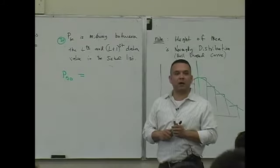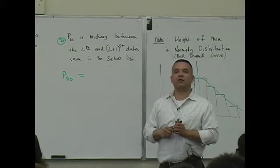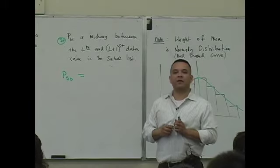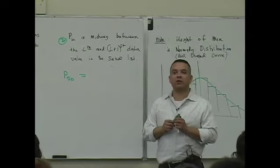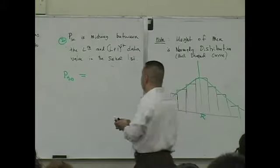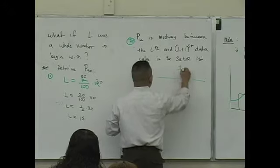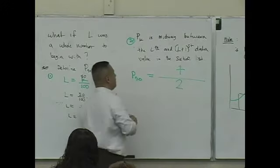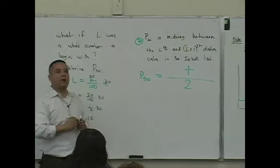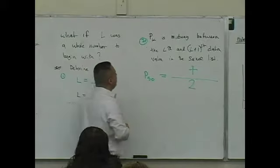Have we ever talked about something being midway? How do you determine the value of something that's midway between two numbers? What do you guys do? You add and do what? You add them and divide by two. Remember that? What do you add?